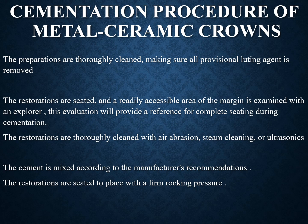For the cementation procedure of metal-ceramic crowns: the preparation should be thoroughly cleaned and all provisional luting agent removed — this can be done using an explorer, air abrasion, steam cleaning, or ultrasonic scalers. The margin must be inspected properly for correct seating of the crown. The cement is mixed according to the manufacturer's recommendation, and the restoration is seated with firm rocking pressure.